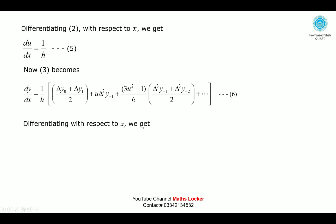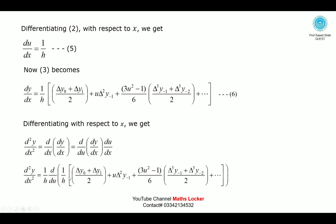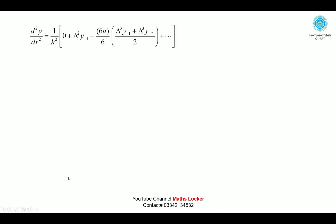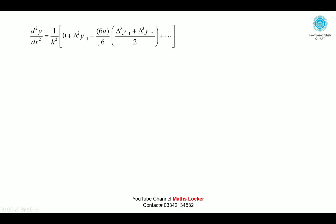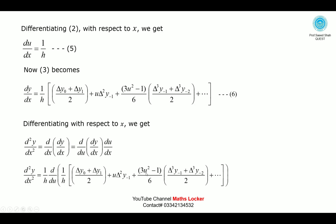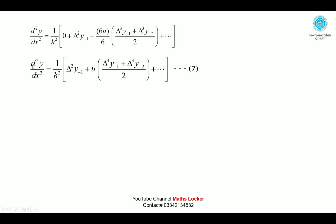Differentiating equation number 6 with respect to x again, using the chain rule and substituting values. After simplifying, 1/h is a constant, giving 1/h². Delta y₀ and delta y₁ are constants. Similarly, delta y₋₁ is a constant. After further simplification, the 6s cancel out, giving equation number 7.